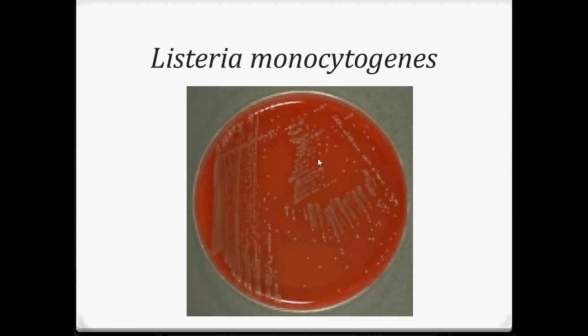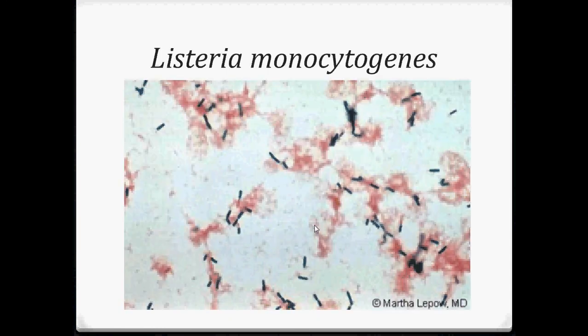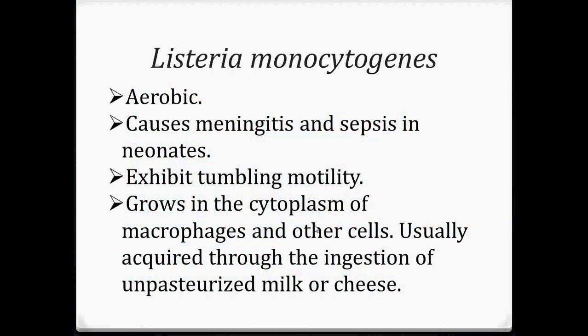Listeria monocytogenes are aerobic and cause meningitis and sepsis in neonates. They exhibit a tumbling motility due to their peritrichous flagella. They also grow in the cytoplasm of macrophages and other cells, and are usually acquired through the ingestion of unpasteurized milk or cheese.